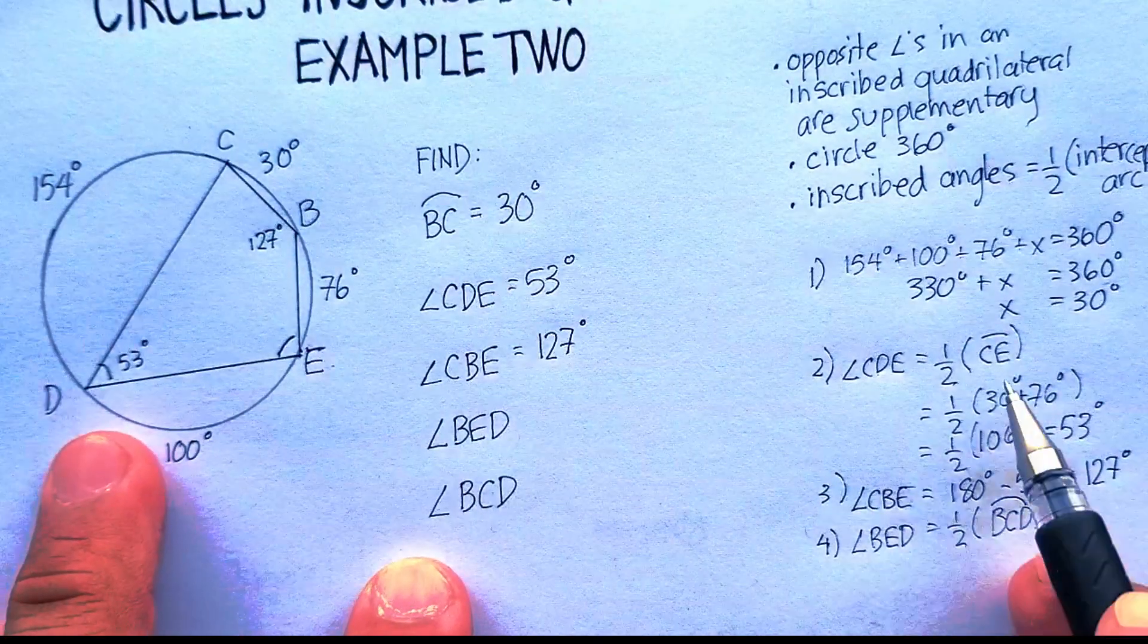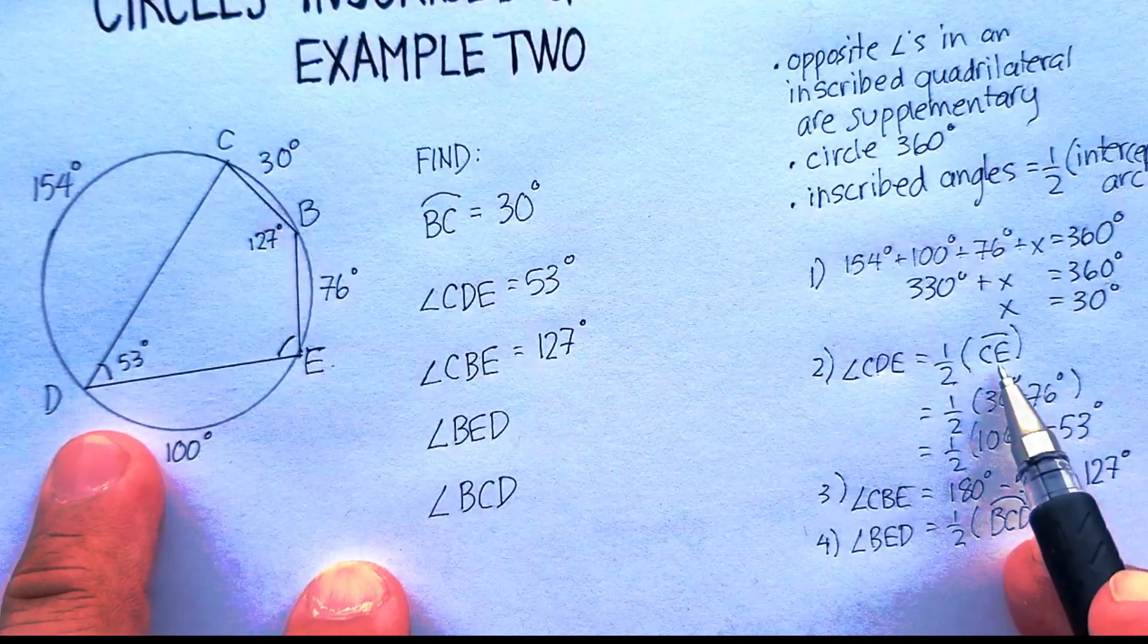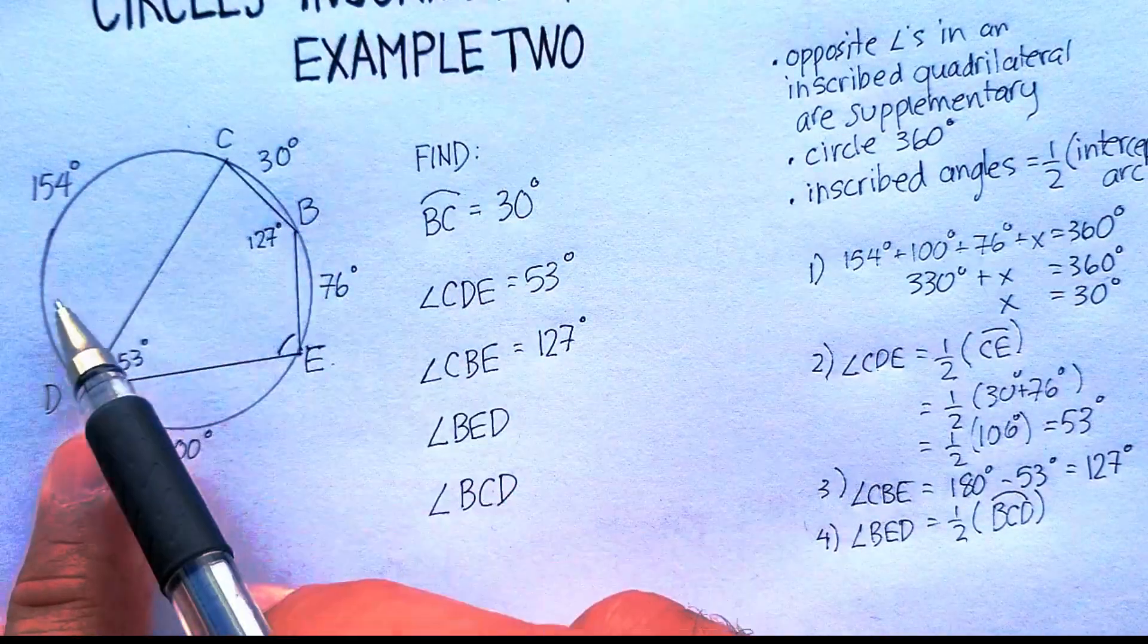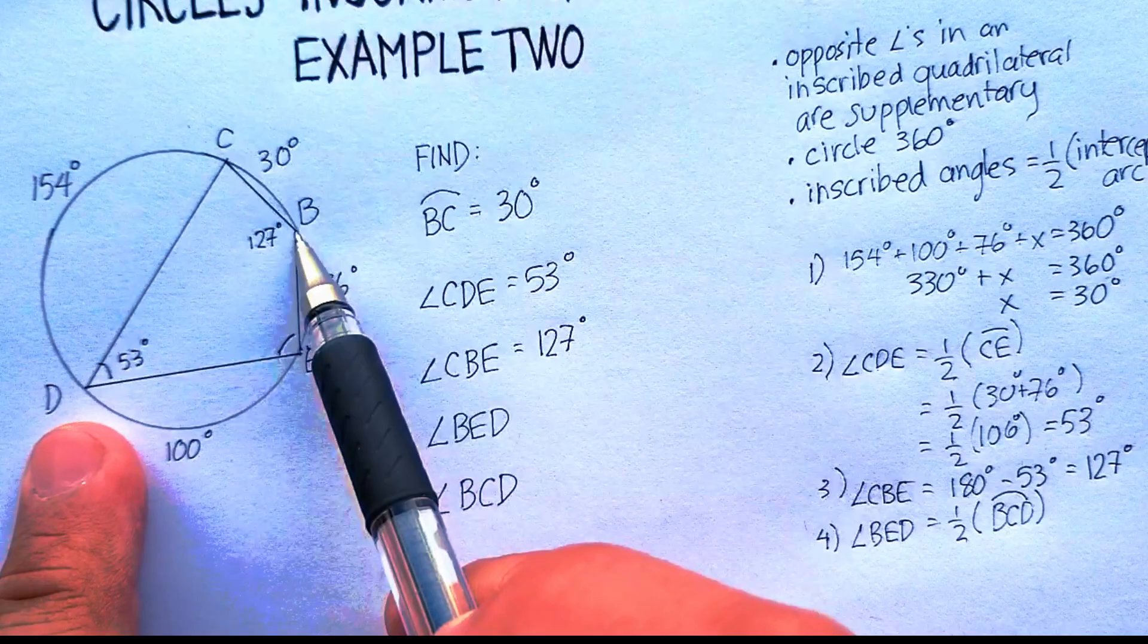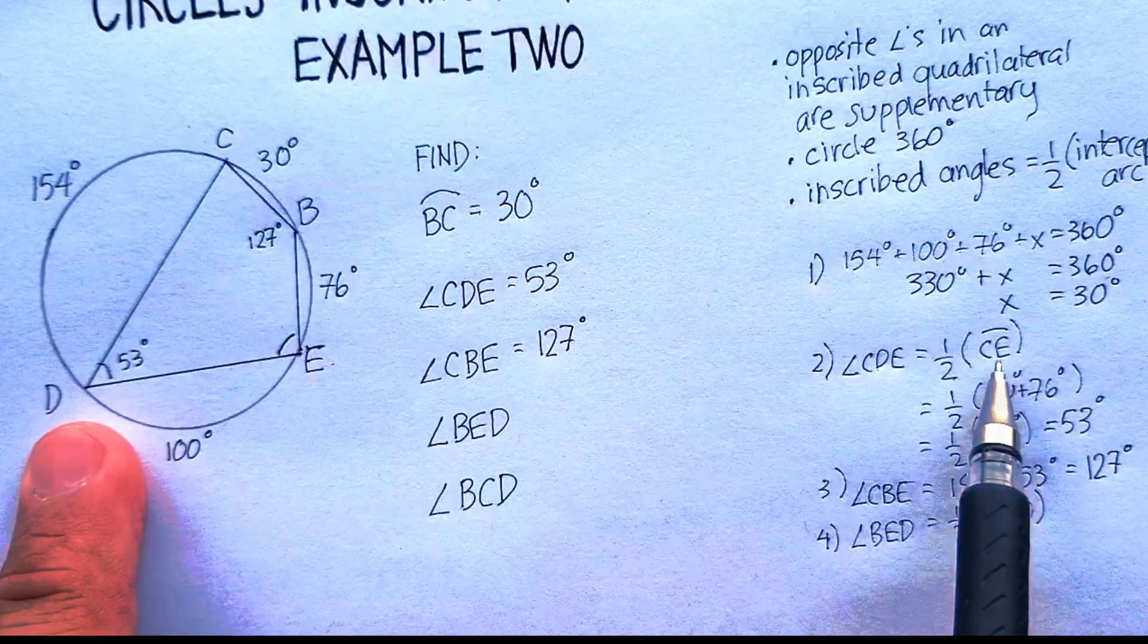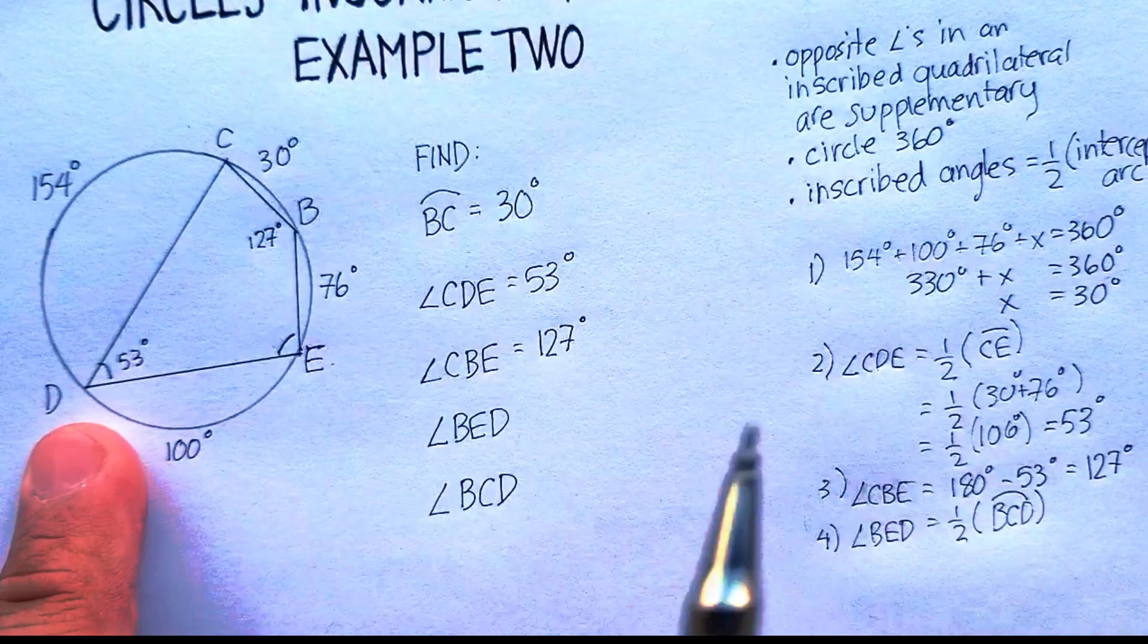Now, notice I use three letters here and only two here. Why? Remember that a major arc is over 180 degrees, which looks like this one's going to be. A minor arc is under 180 degrees, which this one was. So remember the difference between the two.